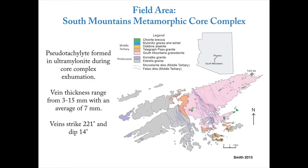My group is exploring this question at a specific field area in Arizona called the South Mountains Metamorphic Core Complex. The pseudotachylites are thought to have formed in ultramylonite during metamorphic core complex exhumation, with the overlying roof sliding away towards the south-southwest, exposing progressively older rocks. We're looking at a place called the northeast site, at the northeast extent of this complex. The pseudotachylite veins there range in thickness from around 3.5 to 15 millimeters, with an average thickness of around 7 millimeters. They are planar features, striking at about 220 degrees and dipping 14 degrees following the right-hand rule.